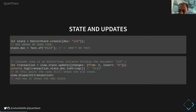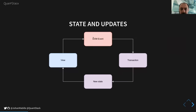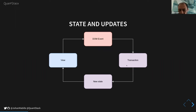You dispatch this transaction to the view and it will update the DOM and display everything correctly. This is basically a data flow: you have a DOM event — it can be a mouse click or keystroke bound to a command — which generates a transaction. The transaction embeds both the changes and the state, it produces a new state, and then the view will apply this new state.